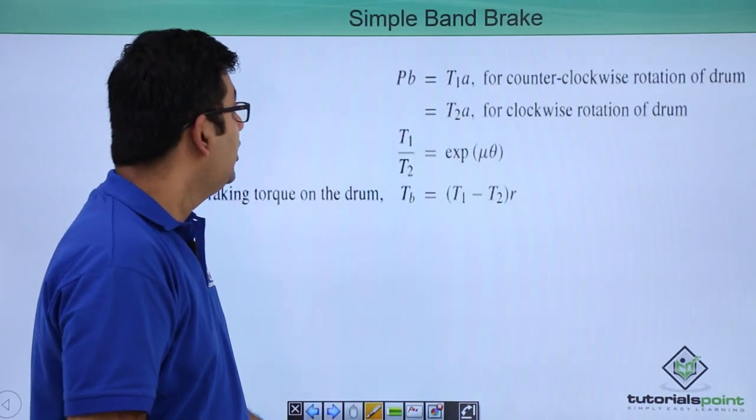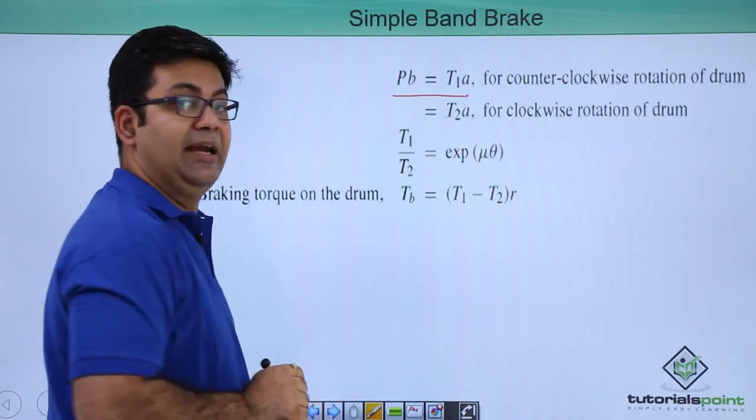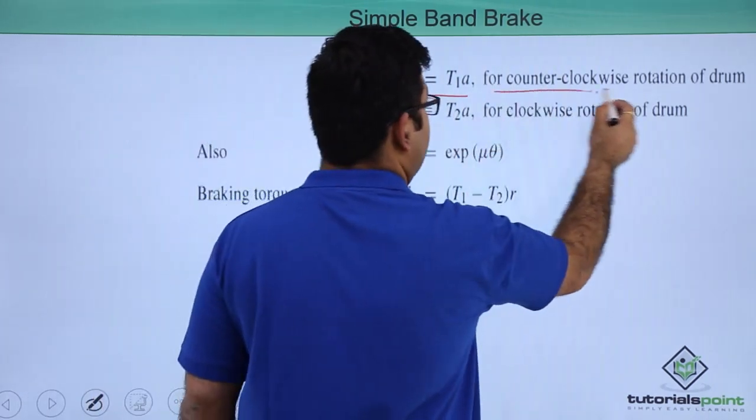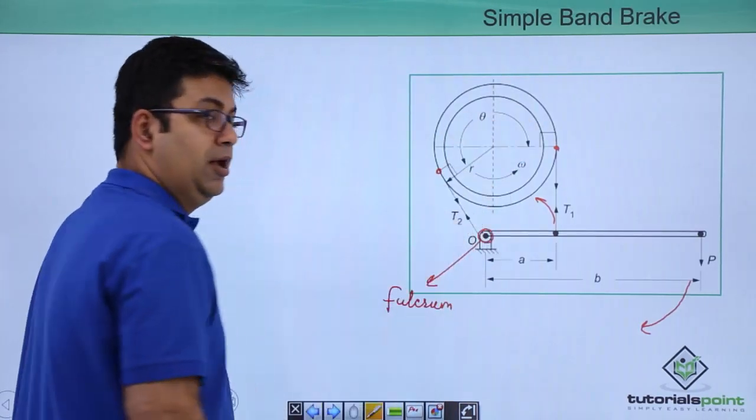So if you look over here, Pb is equal to T1 into A, that is for the counter-clockwise rotation in the drum. And that is what is happening right now. This is counter-clockwise rotation.